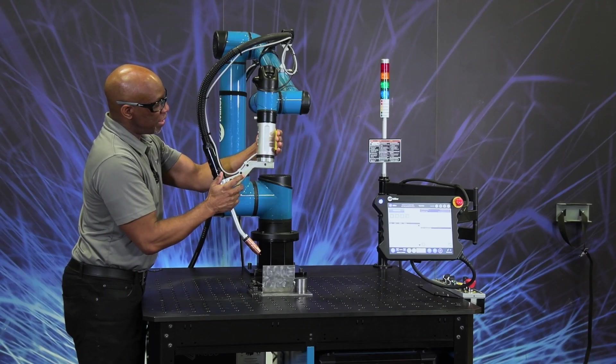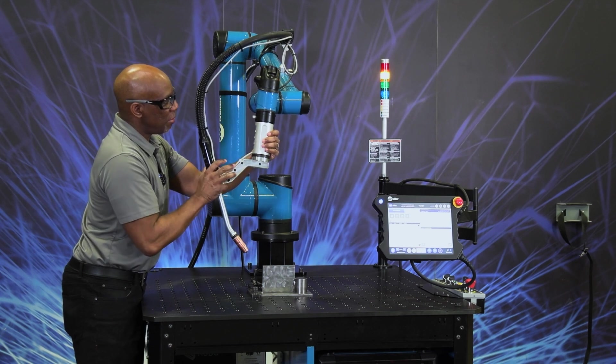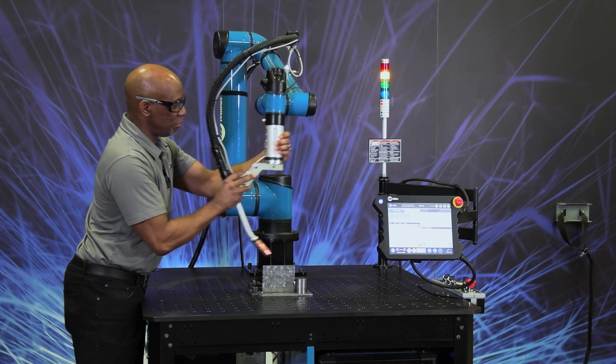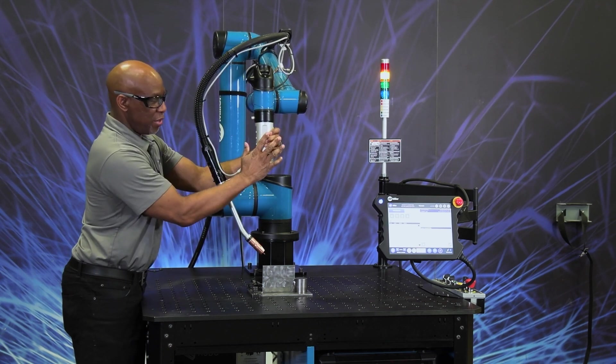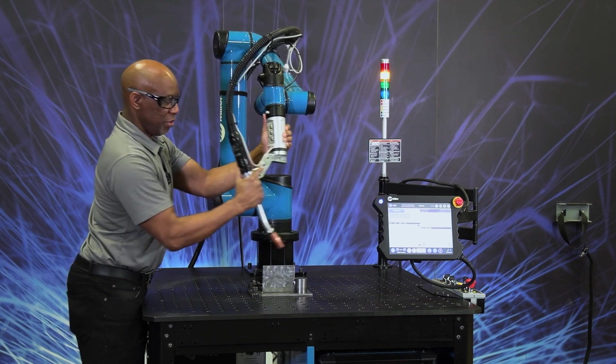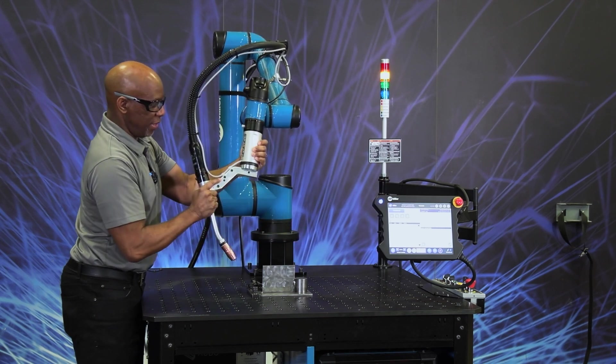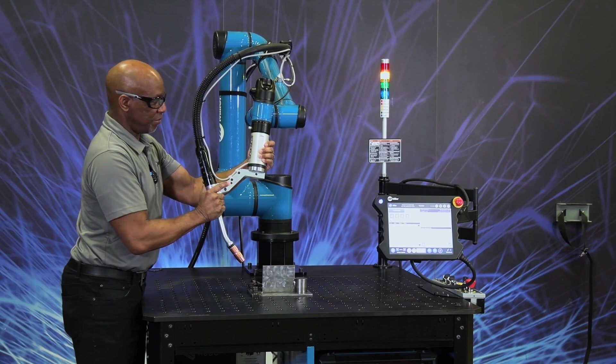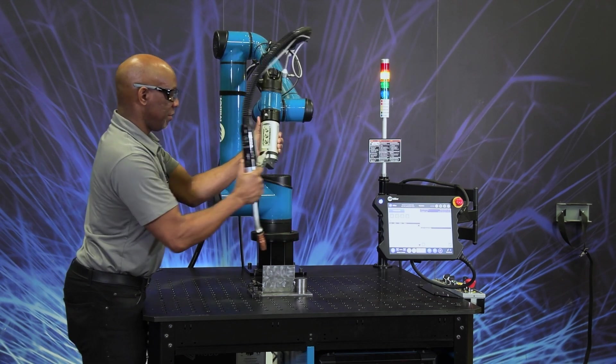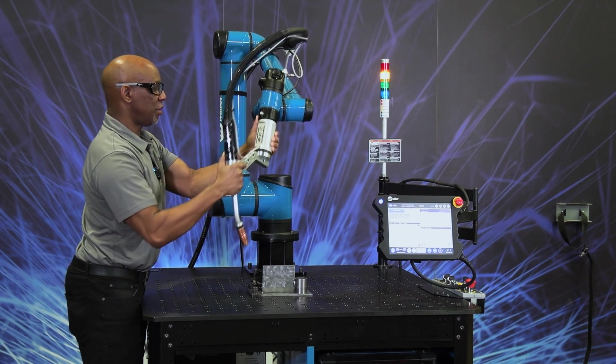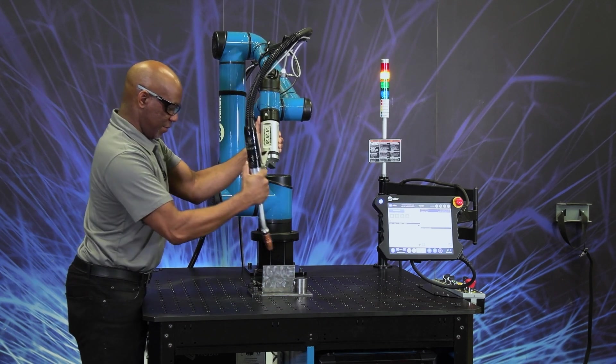So you just press. Most of the force used to move the Cobot is here at the puck, using your other hand to guide the torch. You can see we have free movement.